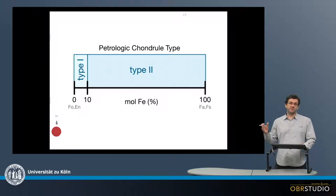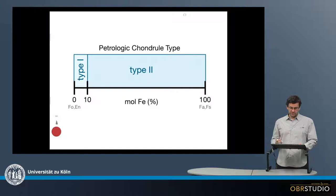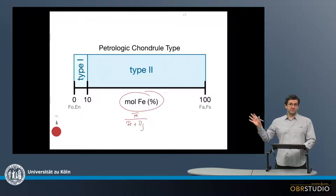We measure the atomic iron and magnesium content within olivine and pyroxene inside the chondrules. Then we plot the mole iron on the x-axis. Mole iron means that we calculate atomic iron divided by the sum of atomic iron and magnesium. This gives us an iron number.